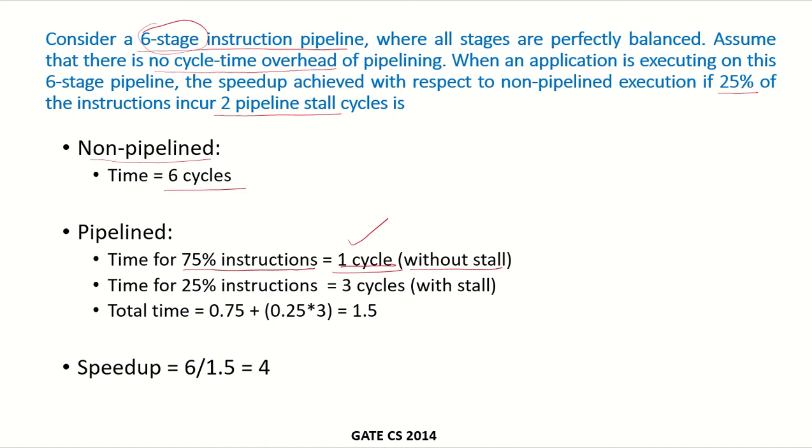For the remaining 25% where a stall is occurring, 1 clock cycle plus 2 pipeline cycle stall, so total would be 3 cycles with a stall. What would be the total time in a pipelined implementation, 0.75 into 1 which is without stall plus 0.25 into 3 which is with the stall, this gives a total of 1.5.